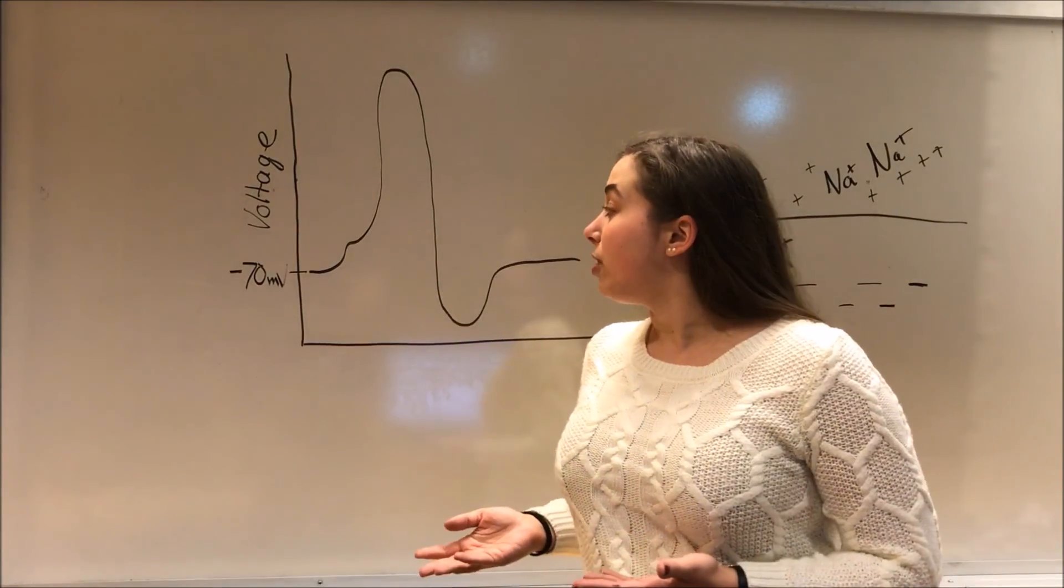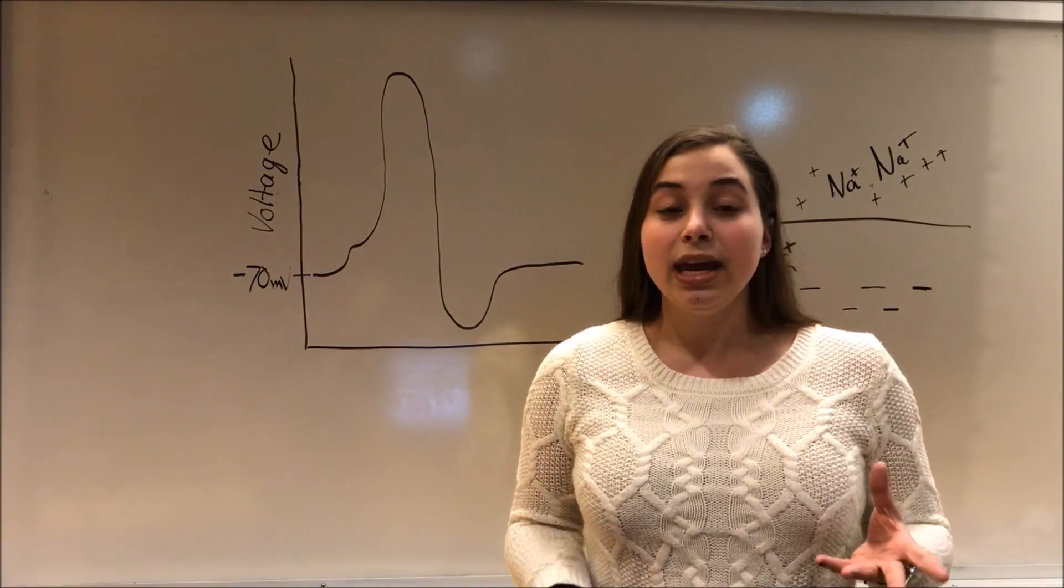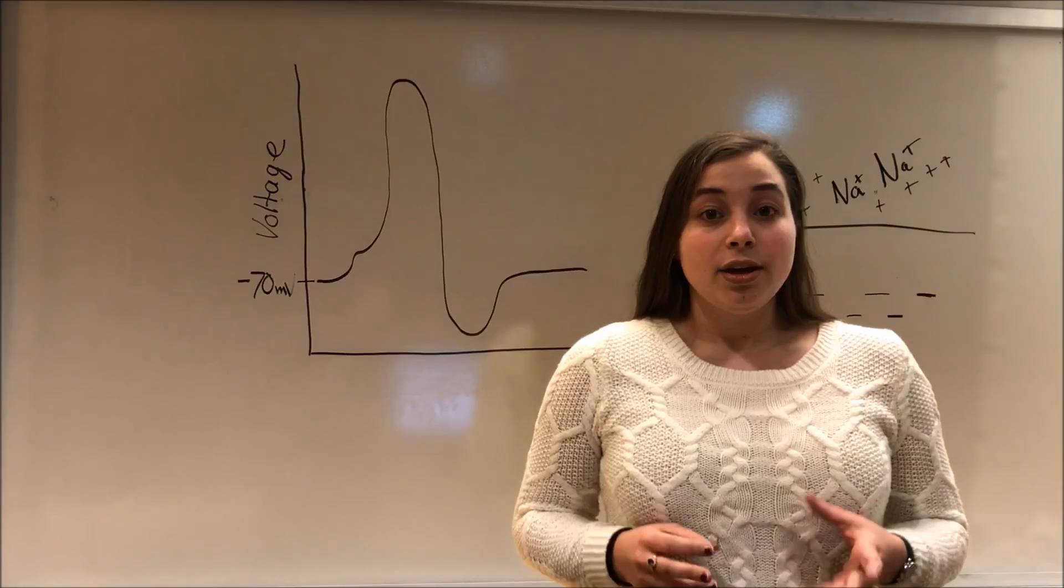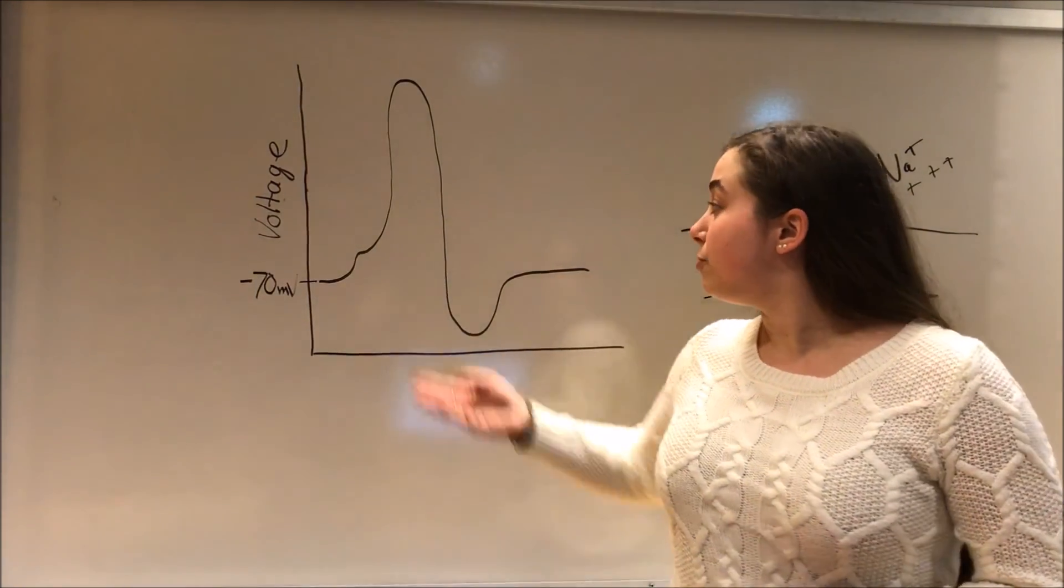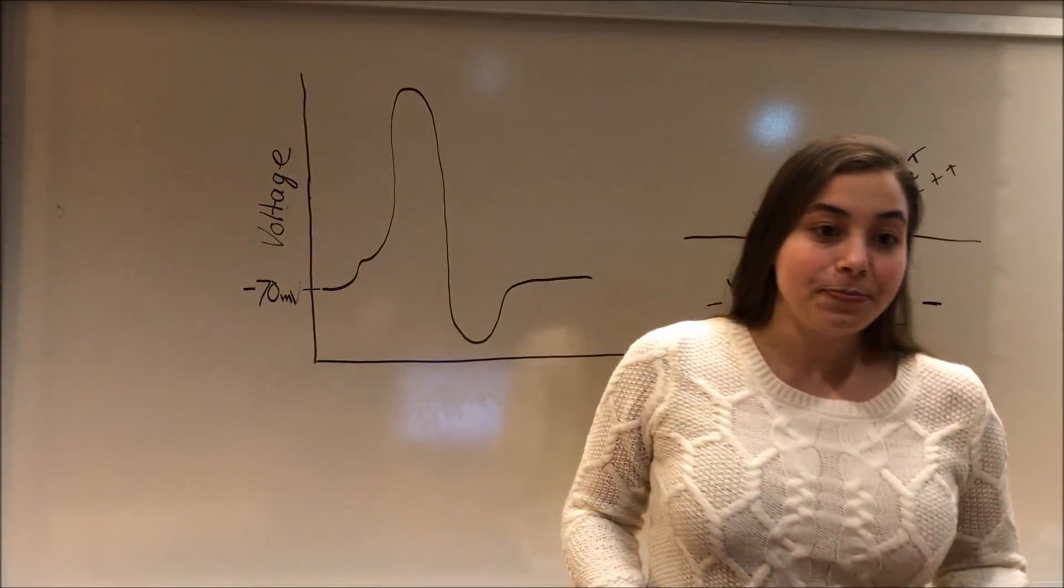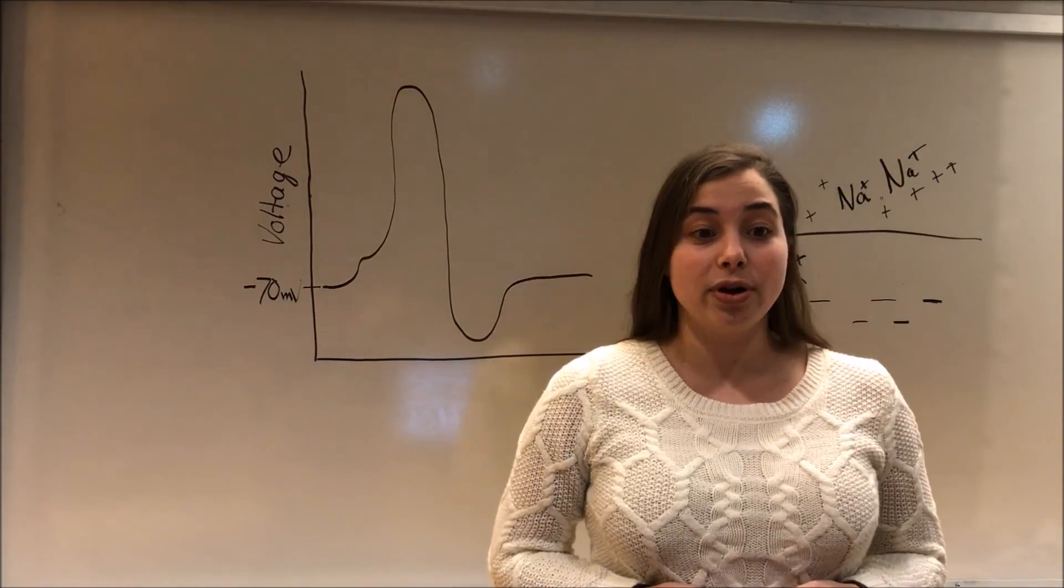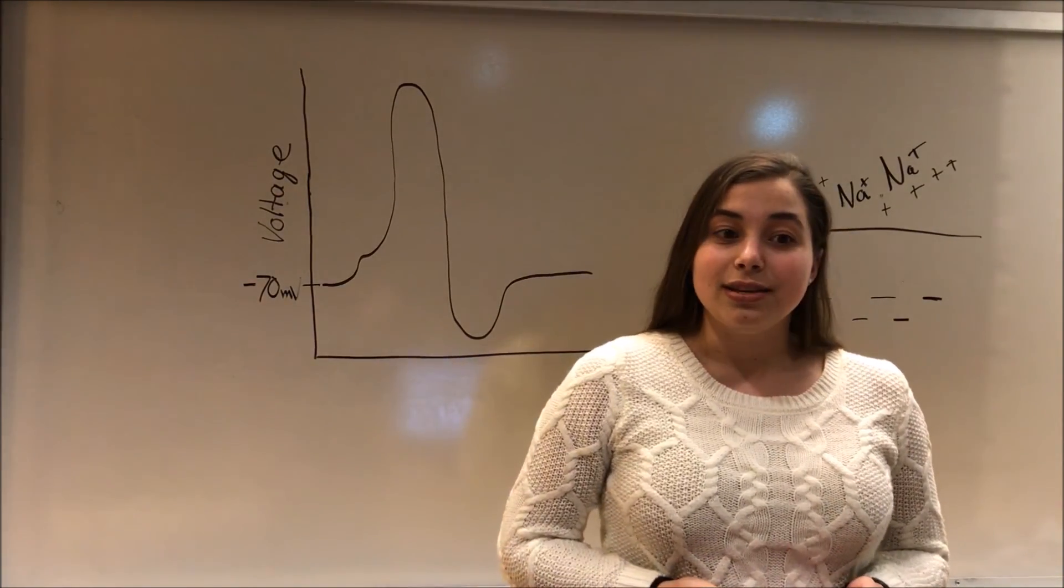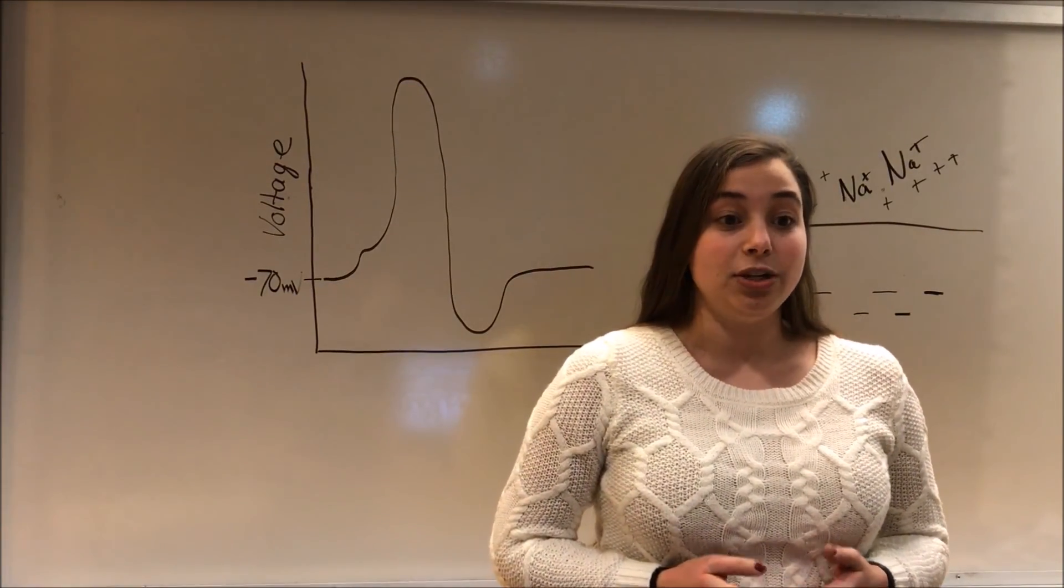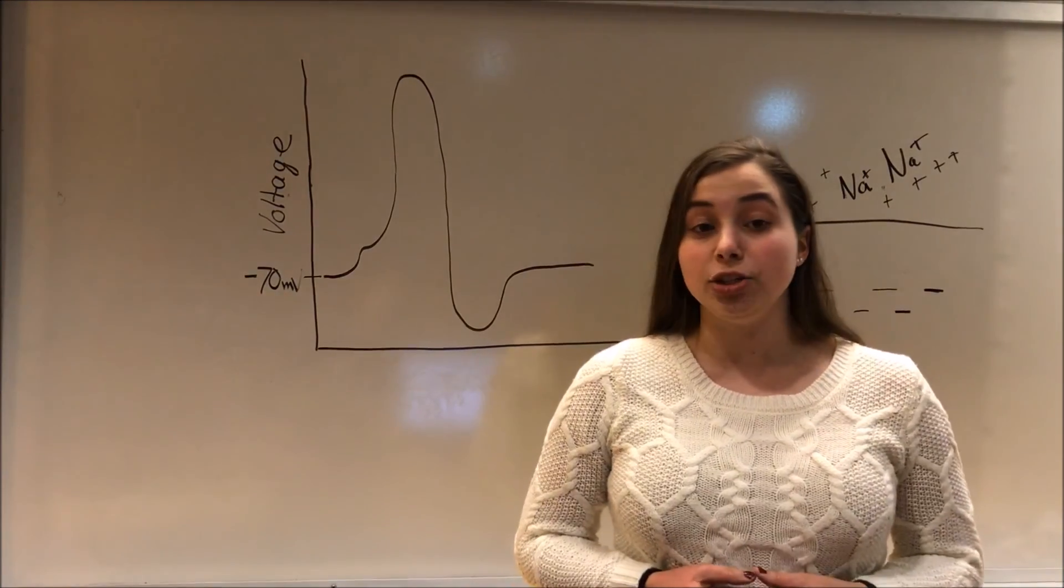So, during depolarization, a neuron is receiving signals from either its neighboring neurons or outside stimuli. And these signals are telling a neuron to either fire or not fire. To fire, a neuron must depolarize or become less negative. So, if we were measuring its voltage, it would be moving up on the graph. If they get signals not to fire, the neuron will hyperpolarize or become more negative. If the neuron gets enough signals to depolarize, the voltage will reach threshold. And that is the point at which an action potential begins. If the membrane potential does not reach threshold, then an action potential will not occur.